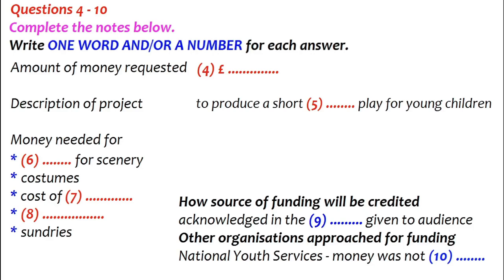Now the next thing they want to know is, if they give us the grant, how they'll be credited. I think they mean how we'll let the public know that they funded us — it looks good for them. Well, we could say we'd announce it at the end of the play, make a speech or something. They might prefer to see something in writing. We'll be giving the audience a programme, so we could put an acknowledgement in that. Yeah, that's a better idea. And the last thing they want to know is if we've approached any other organisations for funding. Well, only National Youth Services, and they said that at present funds were not available for arts projects.